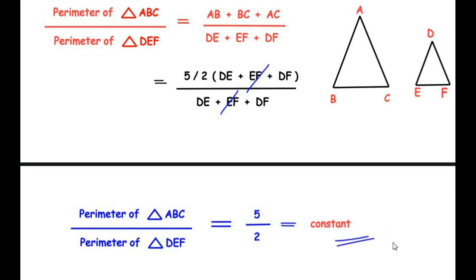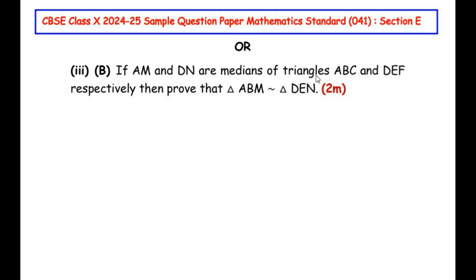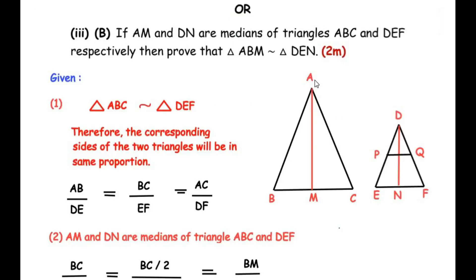Now for the OR question: if AM and DN are medians of triangles ABC and DEF respectively, prove that triangle ABM is similar to triangle DEN. We draw triangle ABC with its median AM and triangle DEF with its median DN. Since triangle ABC is similar to triangle DEF, the corresponding sides are in the same proportion: AB over DE equals BC over EF equals AC over DF.